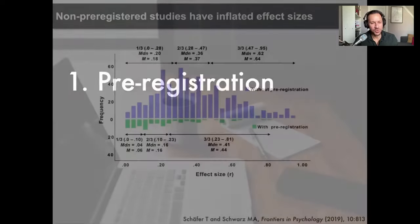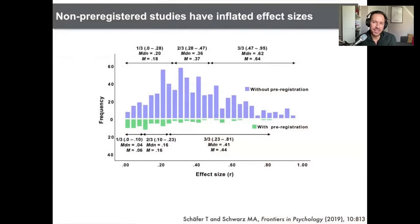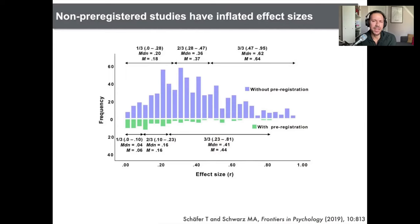Let's jump into pre-registration. This figure is quite revealing. On the top in blue, it shows a particular research field's effect size distribution. And on the bottom, we have the same studies from the same research field with pre-registration — and magically the effect sizes shrink. One reason is that without pre-registration, analytical flexibility increases, which contributes to the inflation of effect sizes. This has been shown for almost every field within the biobehavioral and biomedical sciences.